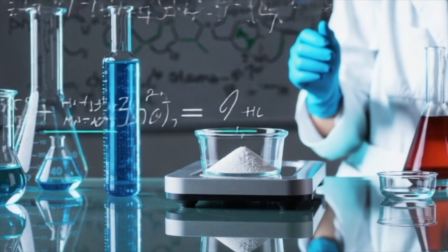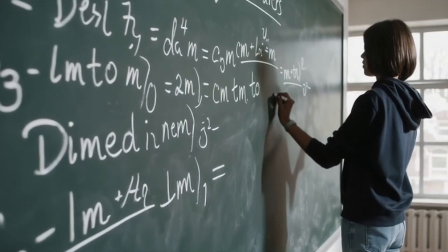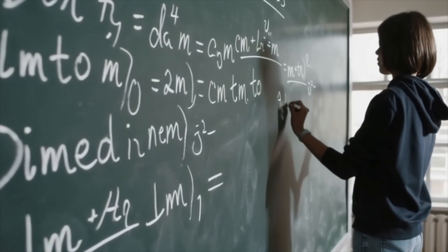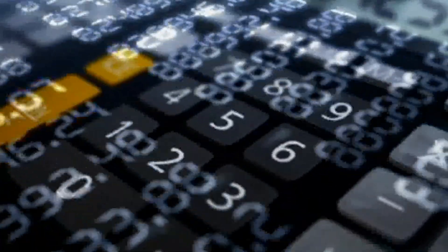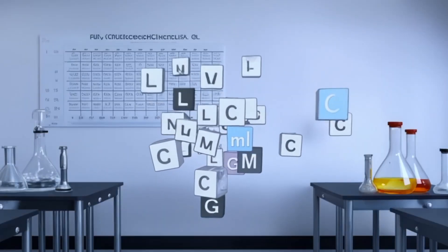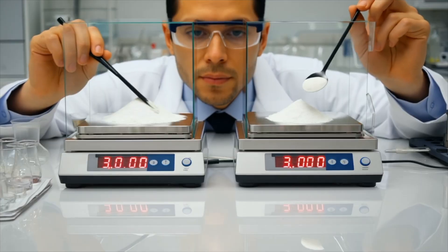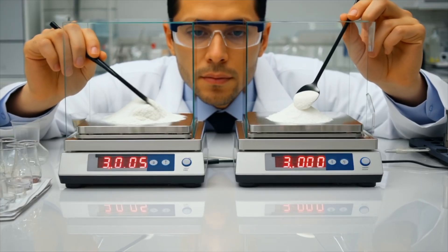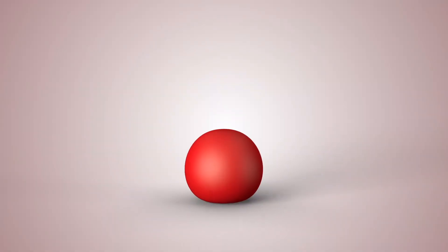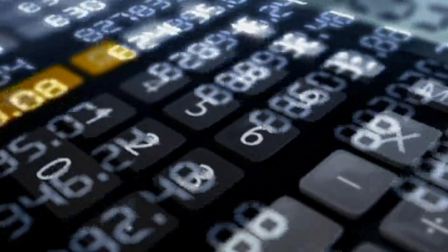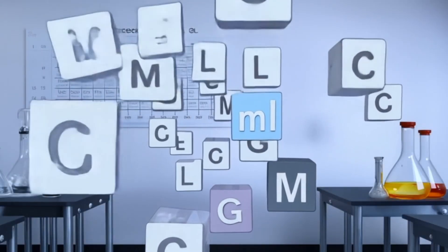One of the most essential skills for success in chemistry will be unit conversions and dimensional analysis. Chemistry is a quantitative science, which means numbers matter and so do units. Units tell you what you're measuring, and chemistry is full of measurements — mass, volume, moles, pressure, energy — and every number you use requires units so we can give meaning to the value.